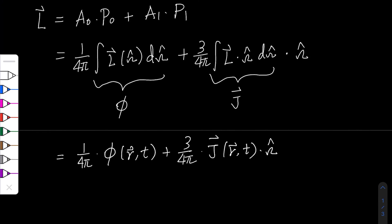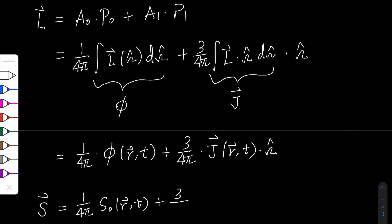We can also do the same expansion to our source term S. So S can be expressed as 1 over 4π plus 3 over 4π times omega hat.